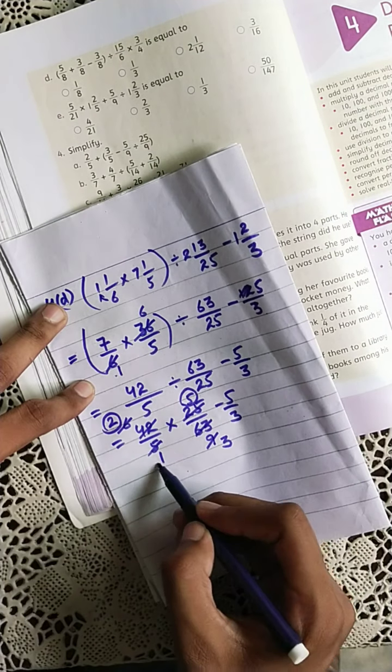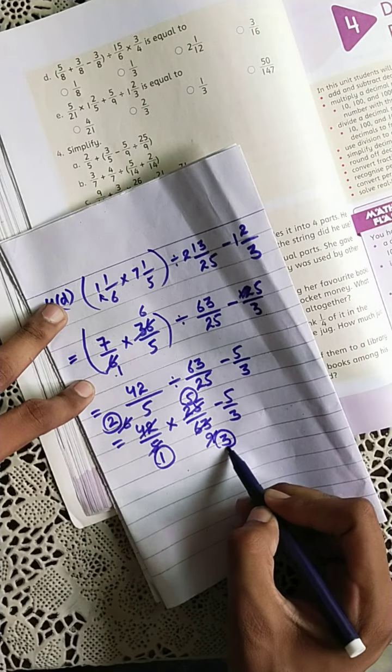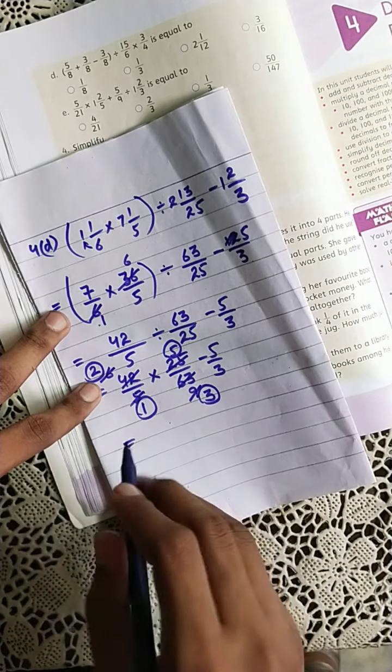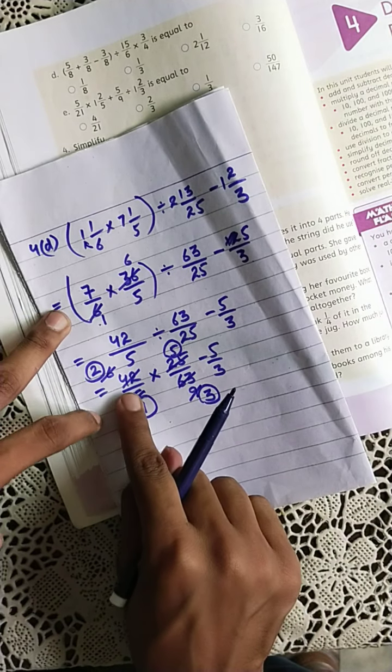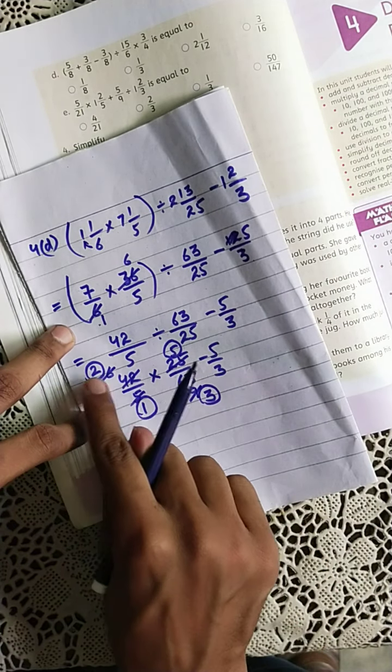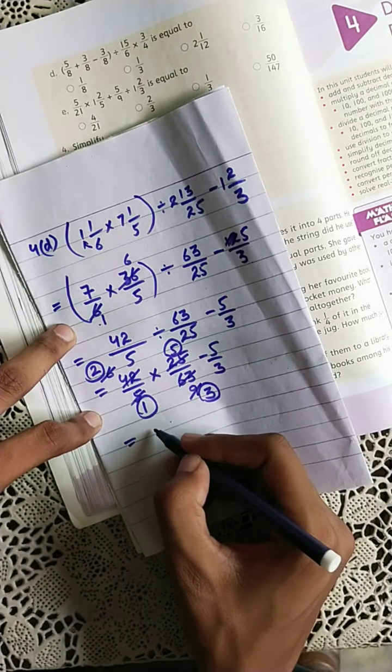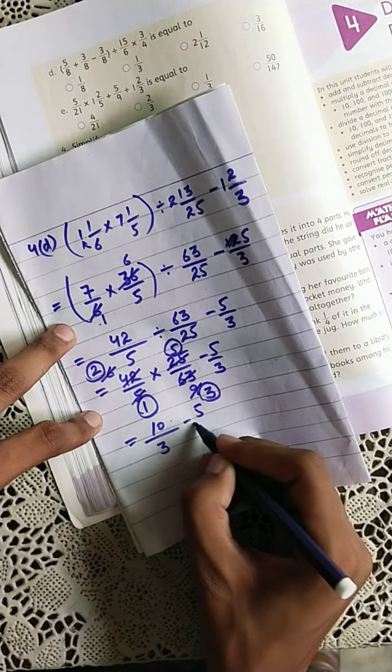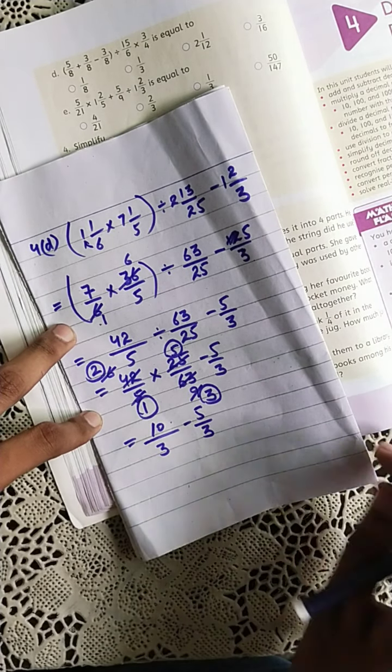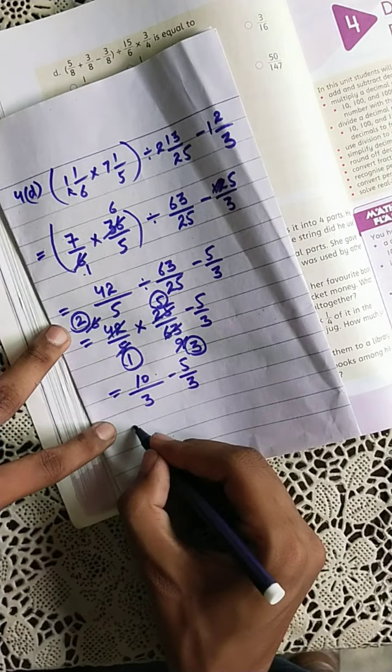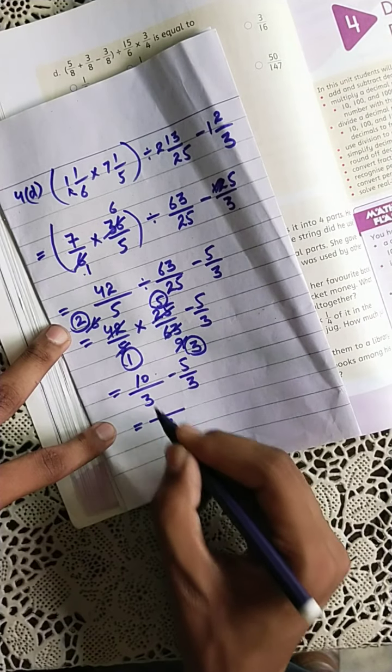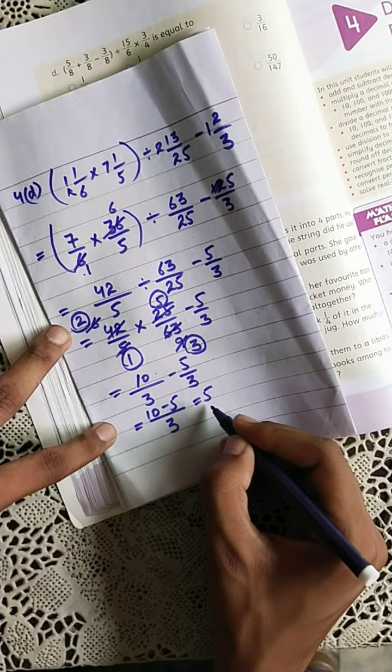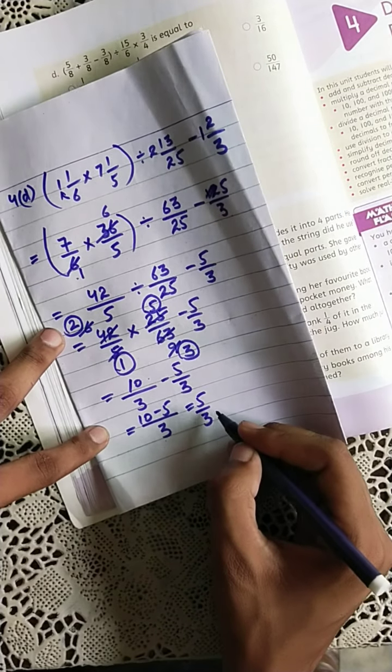Next, further cancels. Here we cancel out. Last, here we have these two numbers, so 5 times 2 are 10 and 3 times 1 are 3, and the next fraction 5 over 3 same as it is. Clear. Now the denominators are the same, you can write into a single fraction, so 10 minus 5 becomes 5 and the denominator will be 3, so 5 over 3.